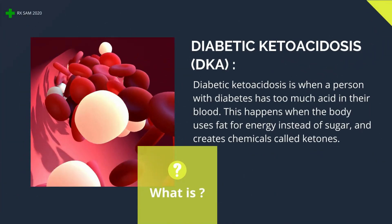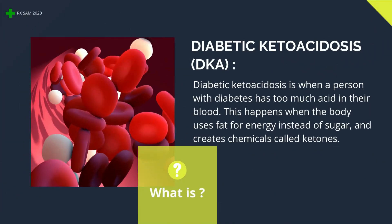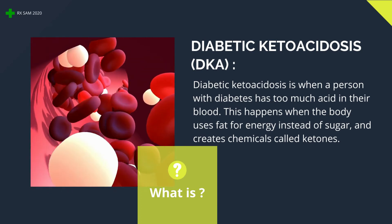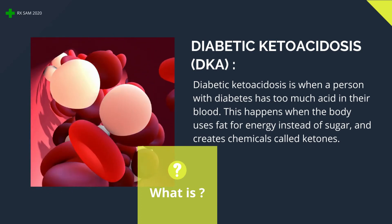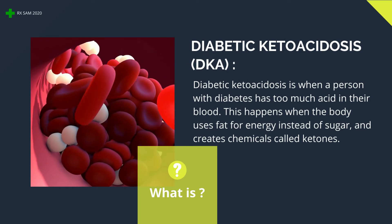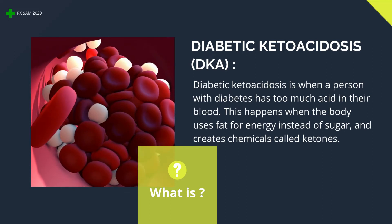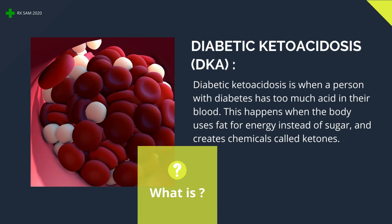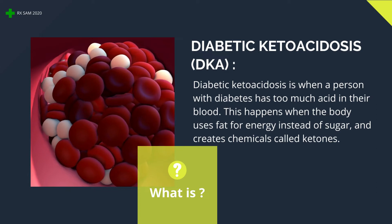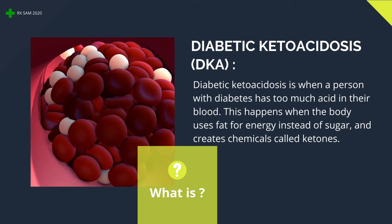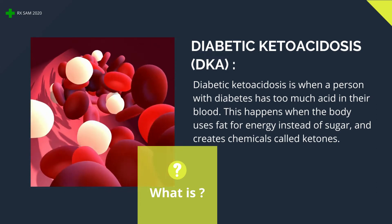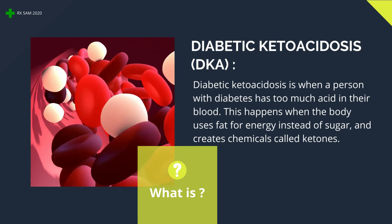Diabetic ketoacidosis (DKA): diabetic ketoacidosis is when a person with diabetes has too much acid in their blood. This happens when the body uses fat for energy instead of sugar and creates chemicals called ketones.